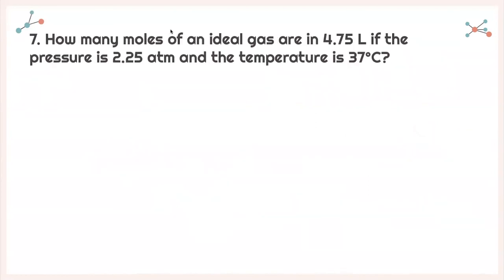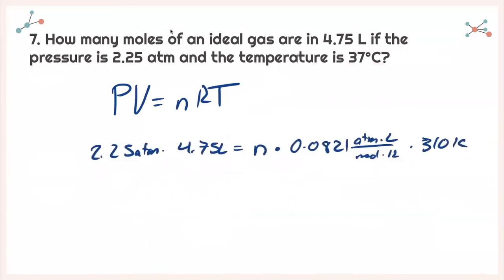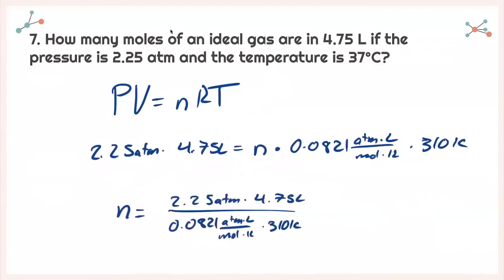For number seven, how many moles of an ideal gas are in 4.75 liters if the pressure is 2.25 atm and the temperature is 37°C? I write PV = nRT and convert 37°C to Kelvin. Plugging everything in, I isolate n. Running it through my calculator, I get 0.420 moles.